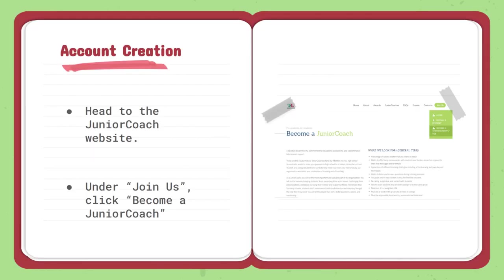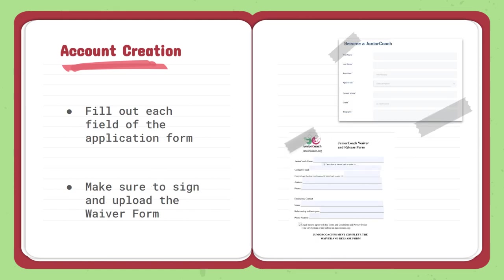First, when we're creating an account, we would head to the Junior Coach website, and under Join Us, we would click Become a Junior Coach. Then you will see an application form, which you'll need to fill out. On the very bottom, don't forget to also fill out the Waiver and Release Form, which is equally as important.